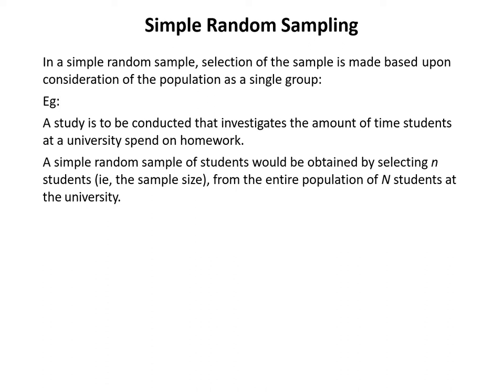For example, say you're doing a study that looks at the amount of time university students spend doing homework. The way you might select a simple random sample would be to choose your sample size — we'd call it little n — from the entire population, which we'd call big N. You'd put all the names in a hat and draw your little n number from the big N. You don't actually have to use a hat with slips of paper — you could use other methods, often random number generation using computer software. The key is that the probability of each individual being selected is the same.